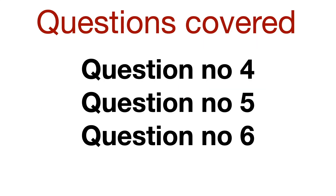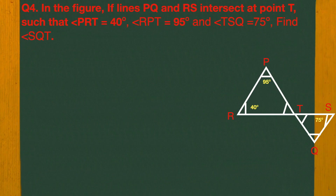In this video I am going to cover question number 4, question number 5 and question number 6. In the figure, if lines PQ and RS intersect at point T, and you are given angle PRT is 40 degrees, angle RPT is 95 degrees, and angle TSQ is 75 degrees.